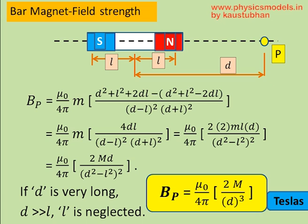The denominator now is of the form (A-B)² into (A+B)². That is mathematically equivalent to (A²-B²)². So, that is how you get the equation for the magnetic field strength at a point on the axis.